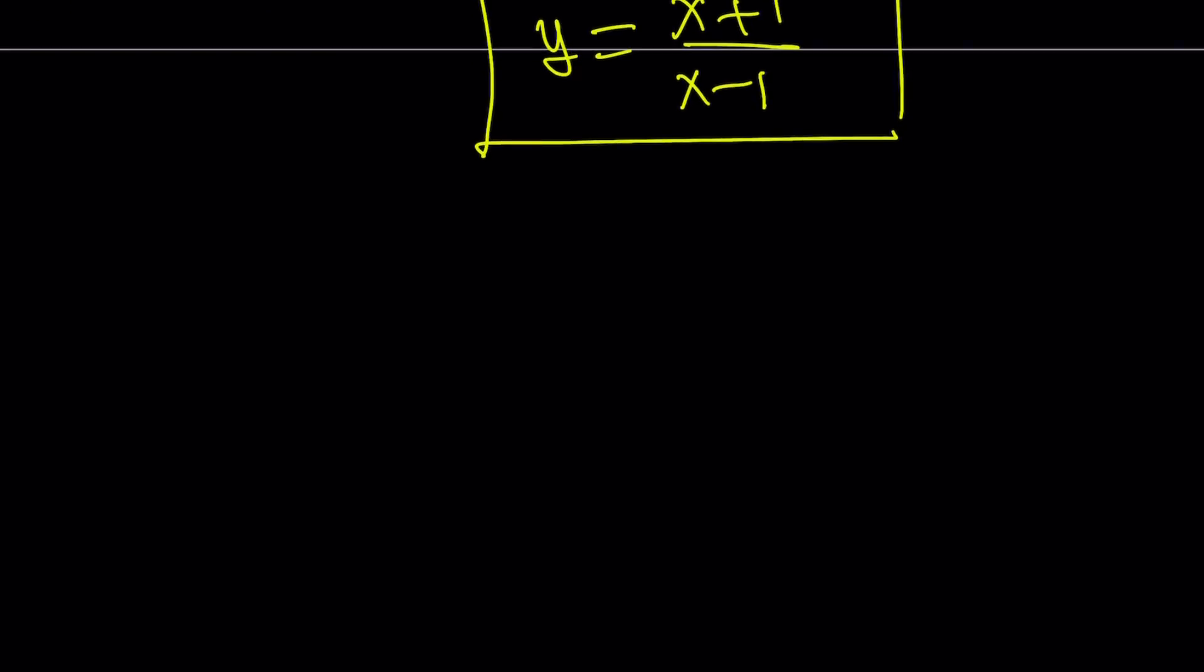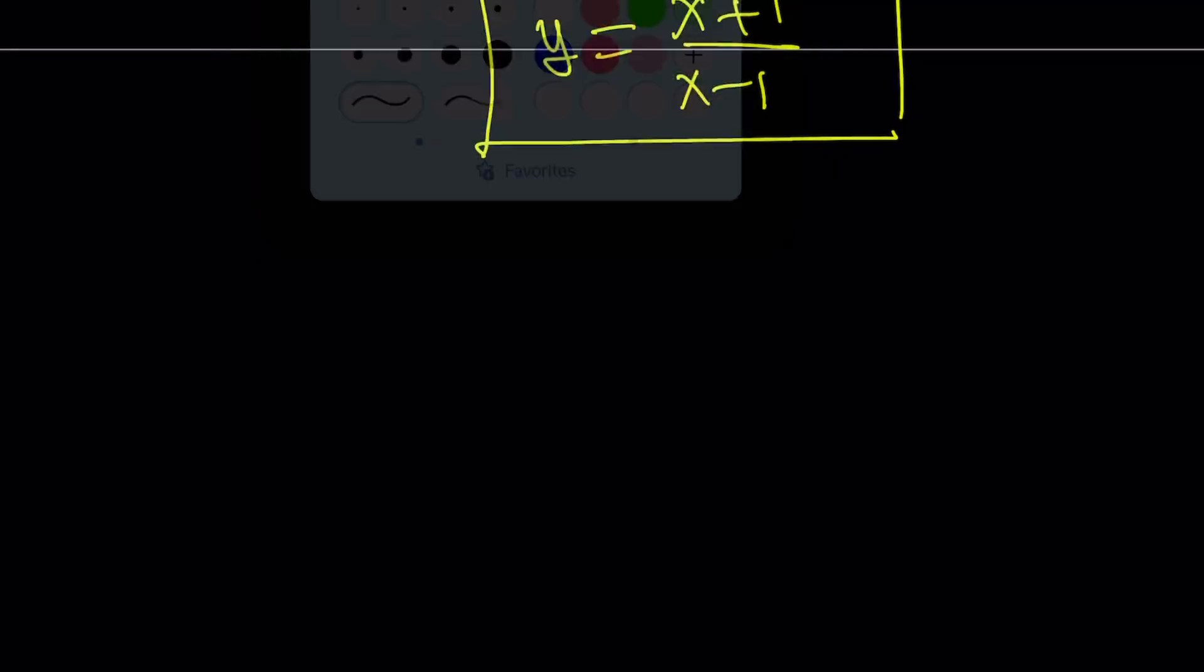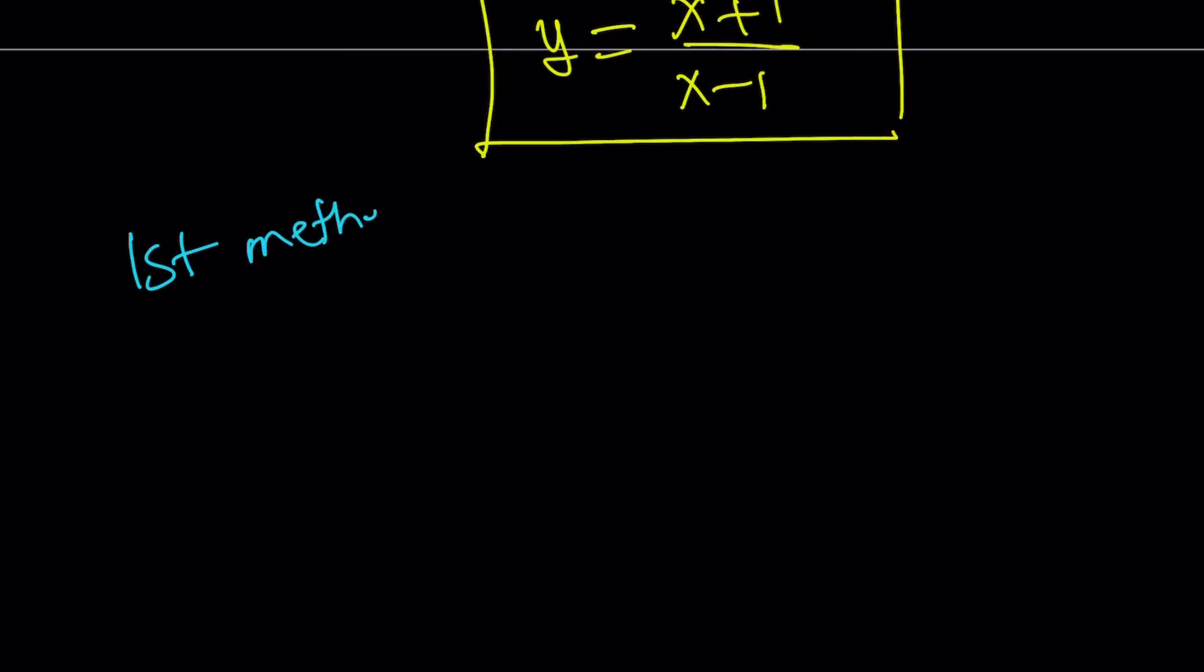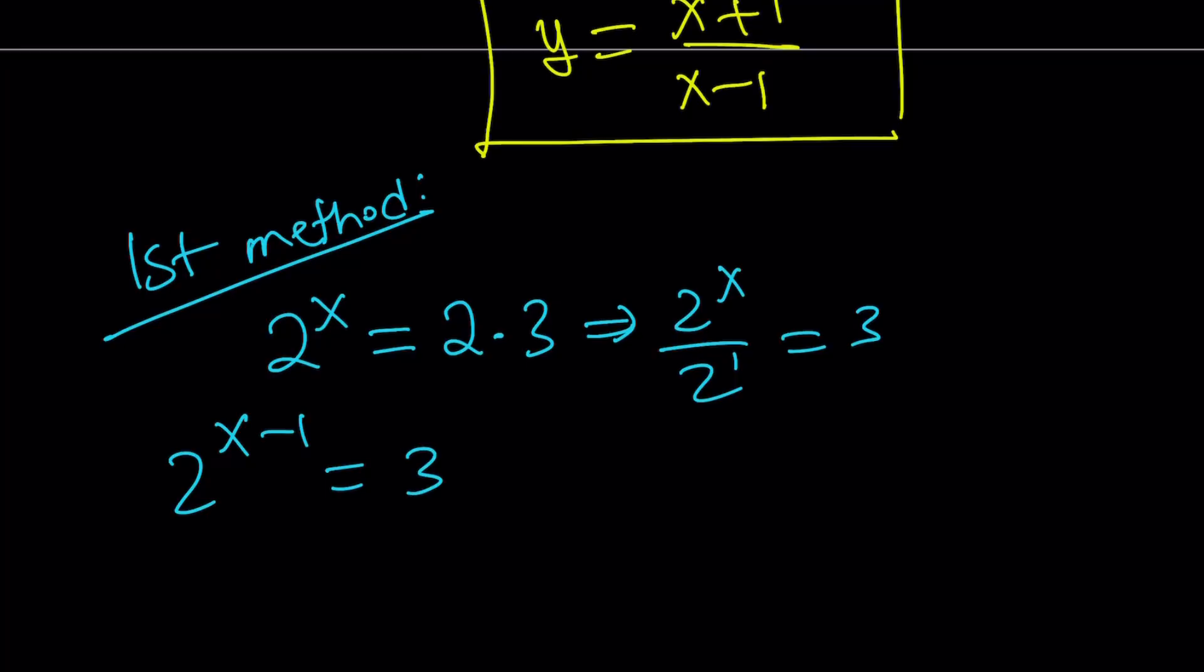Not to the end of the video because we still have to do the first method. So let's go ahead and do the first method next. Okay, so my first method involves the following. I'm going to write 2^x = 6 as 2^x = 2×3. No objections, right? And then divide both sides by 2.